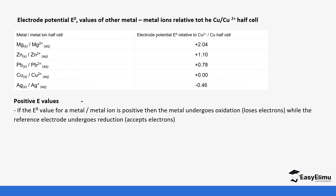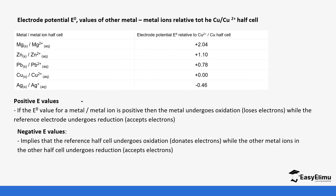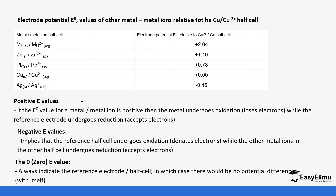When you have positive electrode potential values for a metal-metal ion cell, the metal undergoes oxidation while the reference electrode undergoes reduction. For example, magnesium is going to lose electrons and copper is going to gain them. Negative values — for example for silver — imply the opposite: copper would lose electrons and silver would gain them. The zero value is always shown for the reference electrode, which here is copper, though the standard reference electrode is hydrogen, which you will learn later.